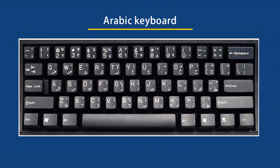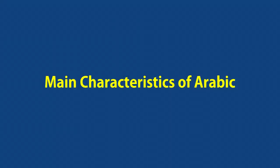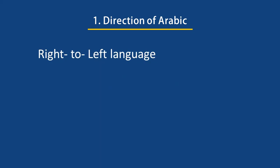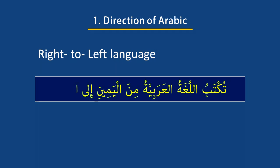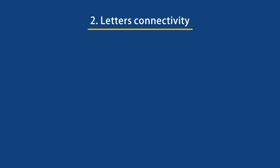There are several significant characteristics of Arabic. The first is direction: Arabic is a right-to-left language, unlike English. We write from the right side to the left, and this applies to all Arabic texts whether found in books, journals, websites, etc. The second characteristic is that to form a word you need to connect letters with each other. Unlike English, Arabic letters do not come in isolation, and when letters are connected the shape of the letters changes.